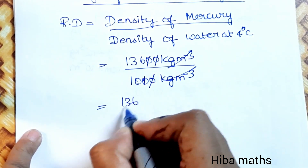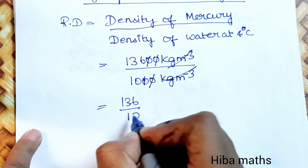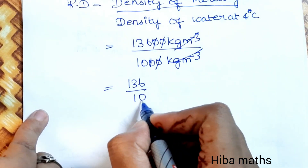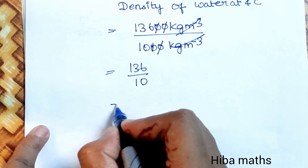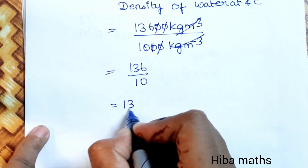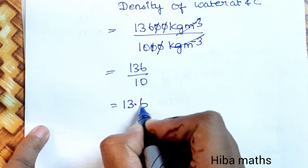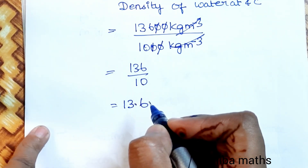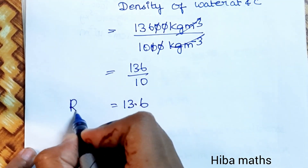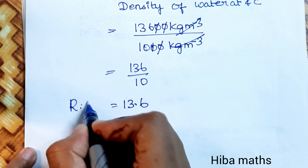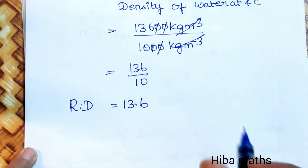Simplifying: 13,600 ÷ 1000 = 13.6. So the relative density of mercury is 13.6. That's an easy sum. Let's try the third question.